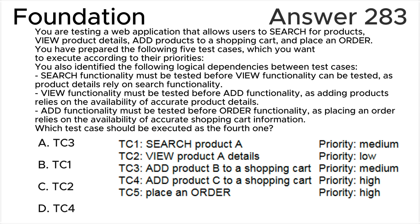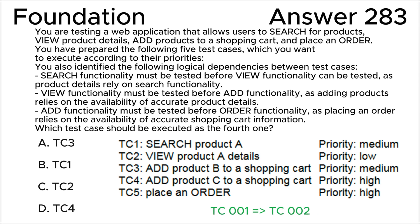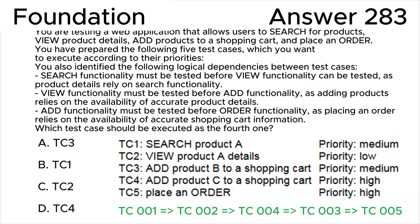To answer this question you need to figure out priorities and dependencies according to the ISTQB syllabus. According to the dependencies shown in the picture, search tests must be executed first, then view tests, then add tests, and then order tests. Within each of these groups, the order is determined by the priorities of the test cases. So test case 1 must be executed first, then test case 2, then test case 4.